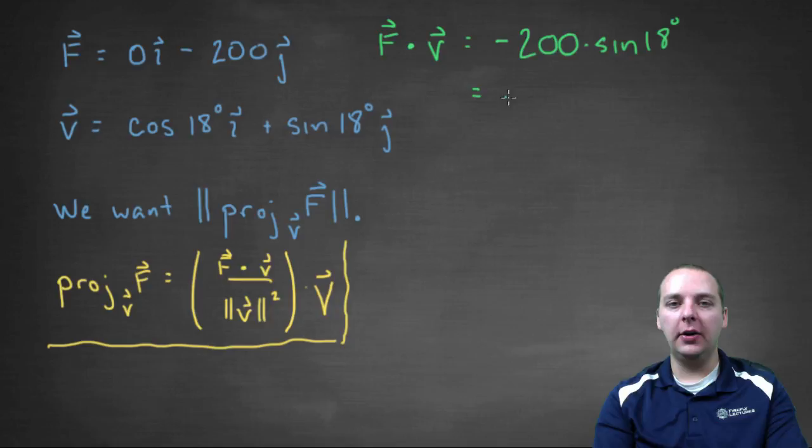To save a little time I went ahead and computed negative 200 times sine of 18 on my calculator. I got negative 61.8. Just make sure your calculator is in degree mode when you do that.